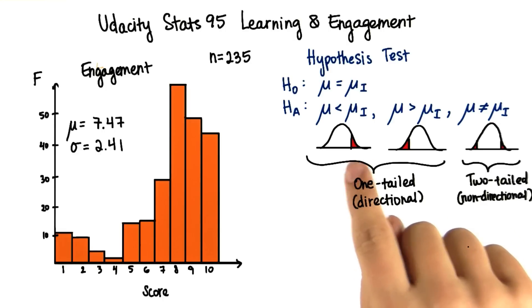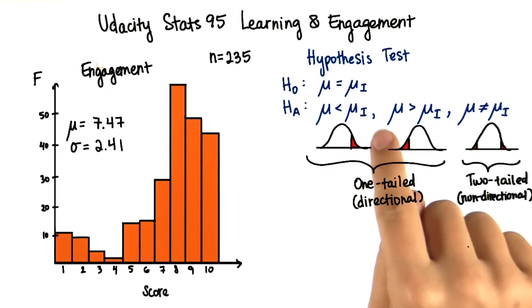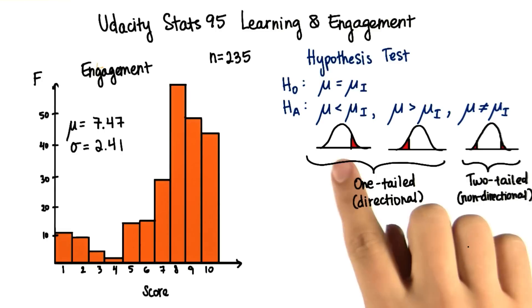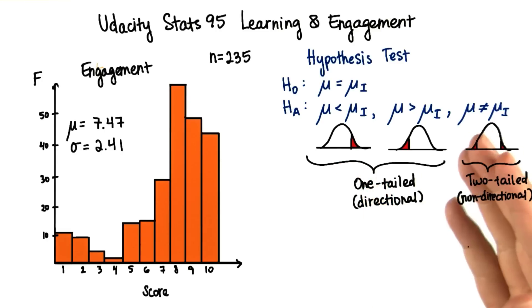We might predict that the treatment's going to increase engagement, when in fact it decreases engagement, in which case we should have a two-tailed test. If we just used a one-tailed test in the positive direction, we may miss the fact that the treatment is doing the opposite of what we would expect.